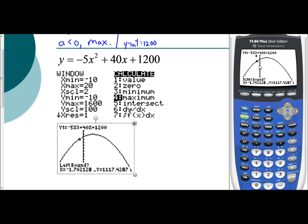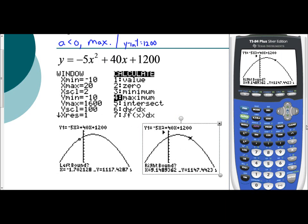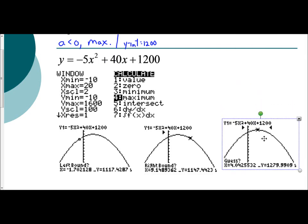Now it's telling you right bound. Notice when you hit enter, it put a little cursor here pointing in the direction of the vertex. That's why it's asking you to do right bound. You want to mark a point to the right of the vertex. So I'm going to use the right arrow to make sure I'm past the vertex, which I am. When you hit enter there, you notice it puts another cursor pointing in this direction. So the calculator is telling you right now, you're telling me the vertex is between these two arrows, which it is. So now it's asking, can you guess where it's at? You can move the cursor close to where you think the vertex is. And again, we hit enter.